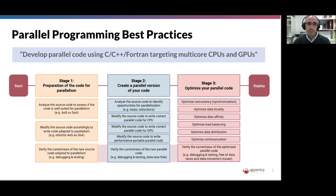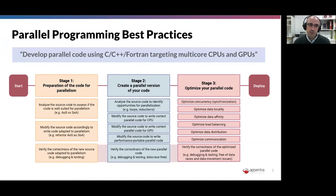Stage number one: prepare your code for parallelism. For example, think about an array of structs that you need to replace with a struct of arrays or independent arrays. This has a very deep impact on how you write the code. You need to analyze and modify the code in the preparation stage to save a lot of development effort and time when you address writing parallel code.